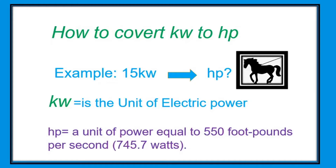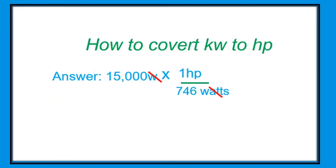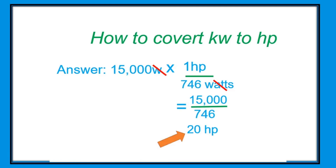How to convert kilowatt to horsepower. Our example here is 15 kilowatts. Kilowatt is the unit of electric power, and horsepower is a unit of power equal to 550 foot-pounds per second or 745.7 watts. Given: one horsepower equals 746 watts, and one kilowatt equals 1,000 joules per second. Answer: 15,000 watts times one horsepower over 746 watts — cancel the watts — so 15,000 divided by 746 equals 20 horsepower.